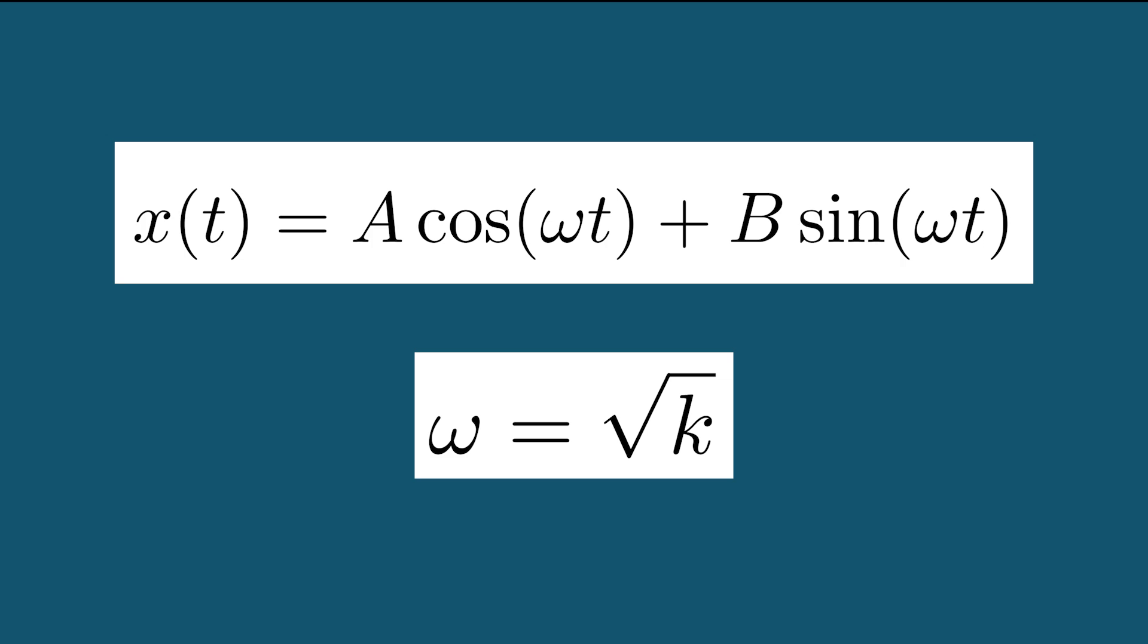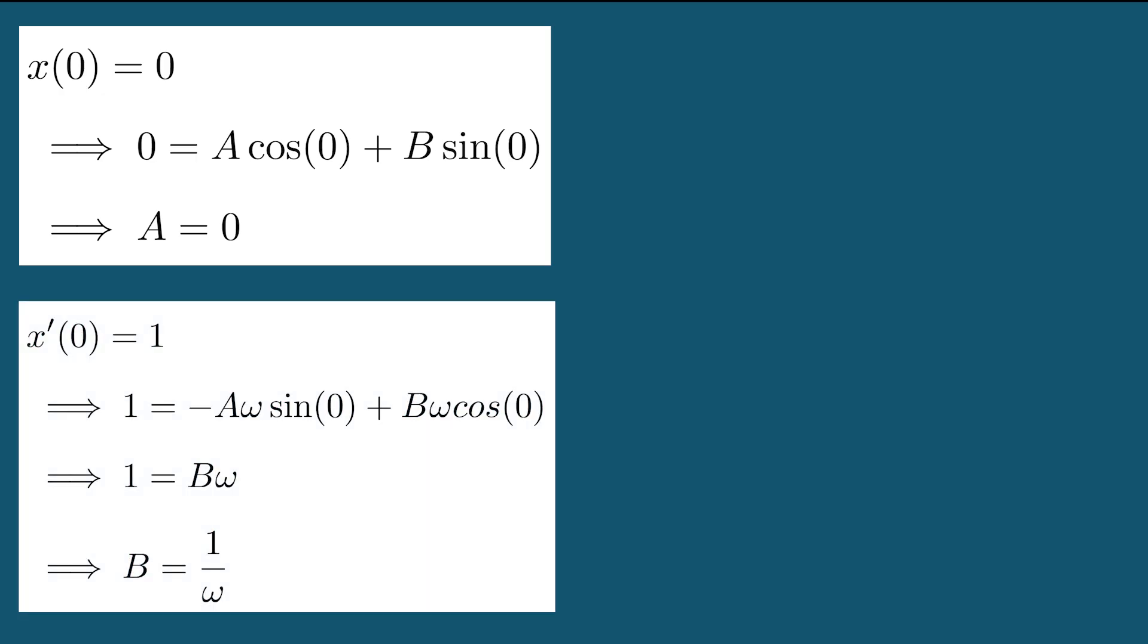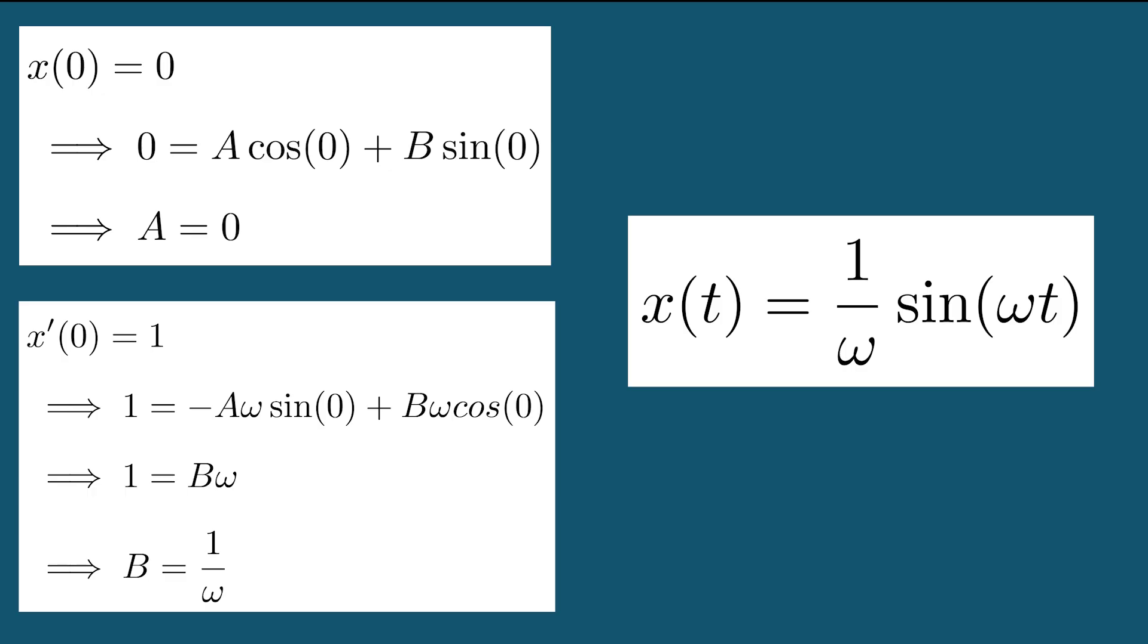Let's use the initial conditions to solve for a and b. First, we find that a is equal to zero, and that b is equal to one over omega. Then we find that x of t is equal to one over omega times sine of omega t.